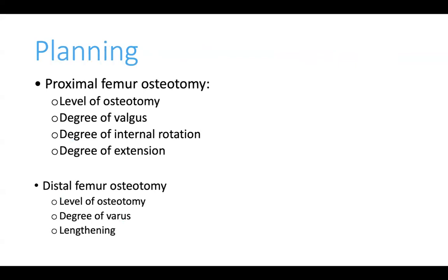Coming to the main part of this talk — planning of the IHR. Planning must be done at two sites: the proximal femur and the distal femur. At the proximal femur site, you must plan the level of osteotomy, how much valgus to give, how much extension to give, and how much internal rotation to give — since PSO is not a simple valgus osteotomy but also has extension and internal rotation components. At the distal femur site, you must decide the level of osteotomy, the amount of varus, and the amount of lengthening.